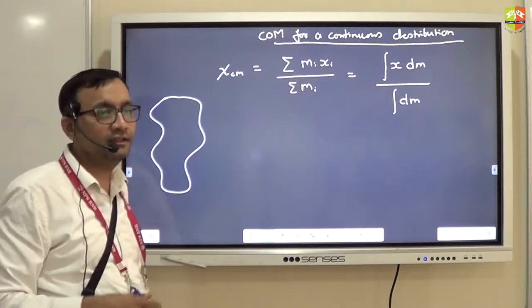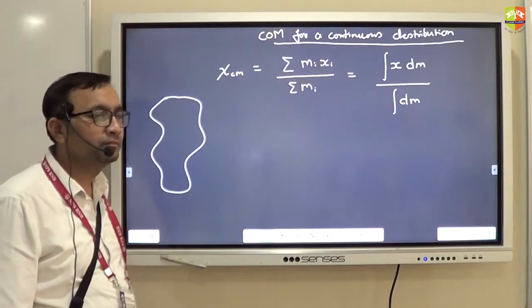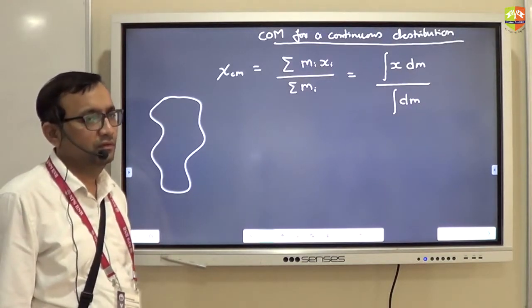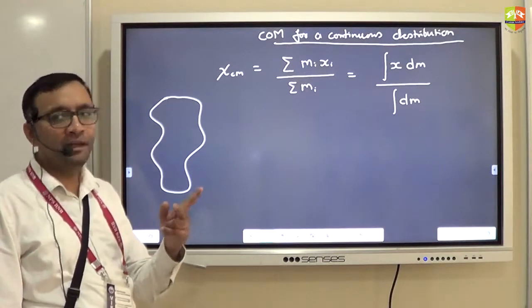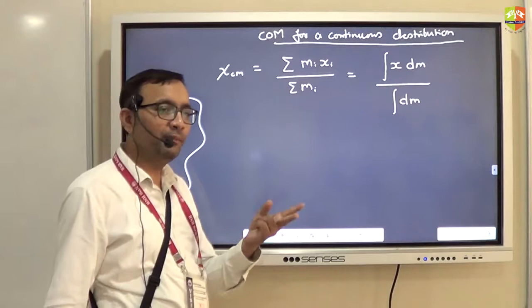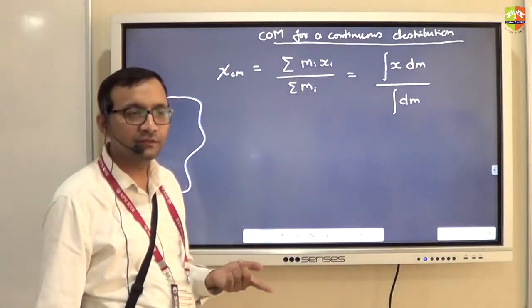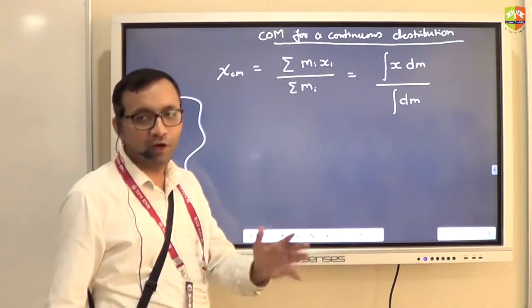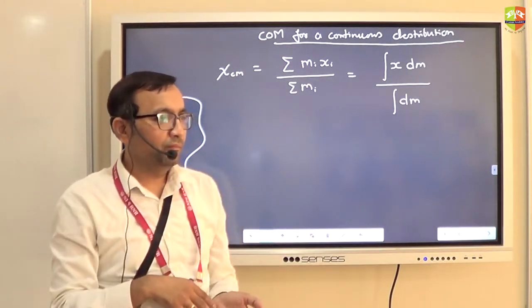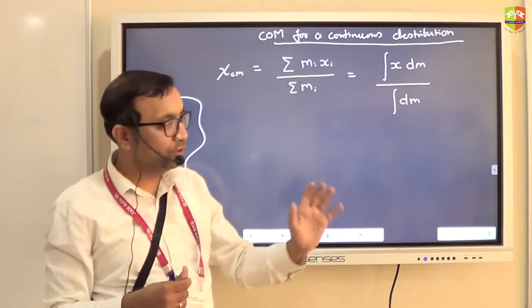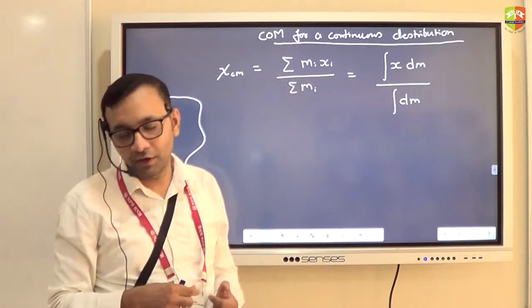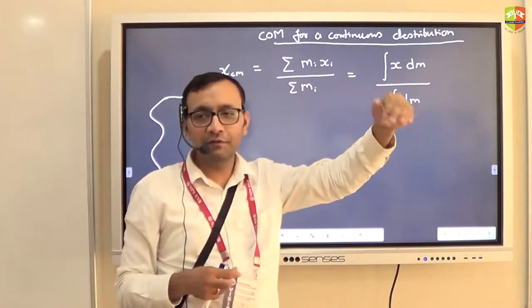Can you integrate this immediately? No — there are two problems. First, you don't know the limits of integration — the upper and lower limits. Second, there are two variables: x and dm. So you need to know the limits and express m as a function of x, or x as a function of m, for a particular situation. For a given scenario, you will know the limits and the relation between m and x. Right now this is just the general formula — similar to F = ma, which you can't solve without knowing what forces are applied. This formula must be solved separately for different objects.